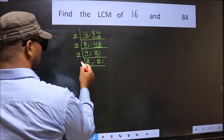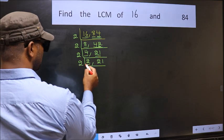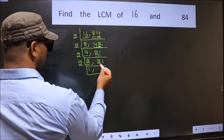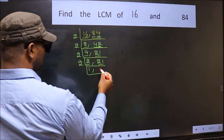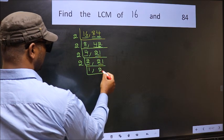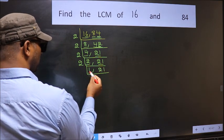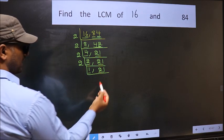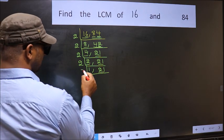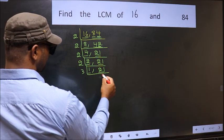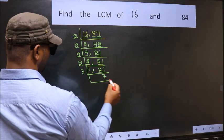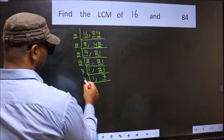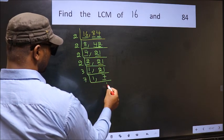Now we have 2 here. 2 is a prime number, so 1 times 2 is 2. The other number 21 is not divisible by 2, so we write it down as it is. Now we got 1 here, so focus on the other number 21. 21 is 3 times 7. Now we have 7; 7 is a prime number, so 1 times 7 is 7.